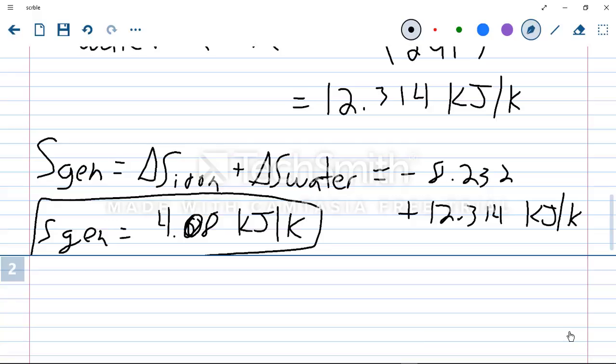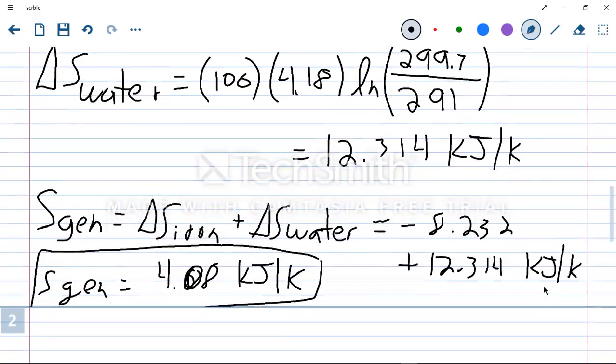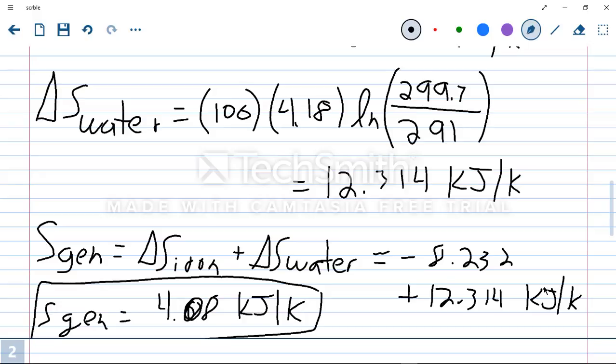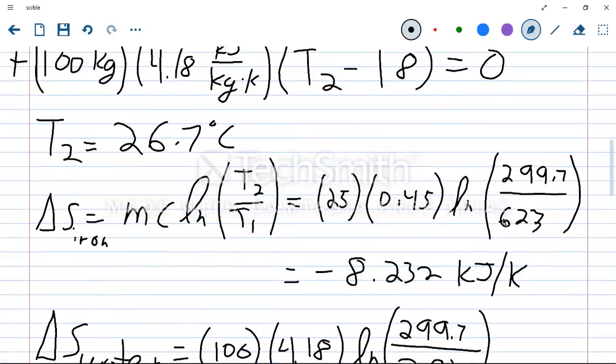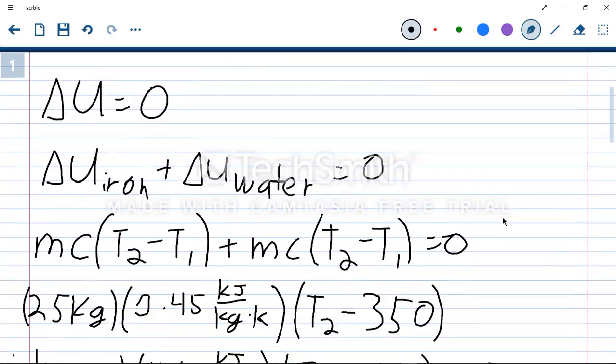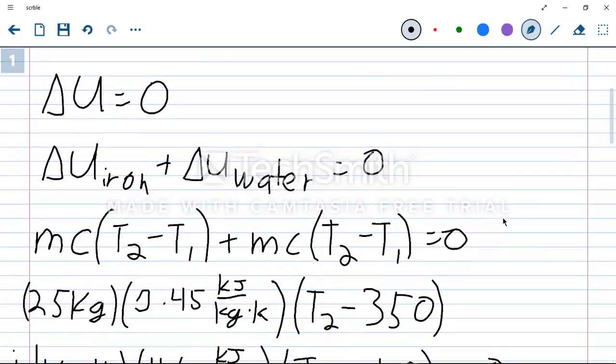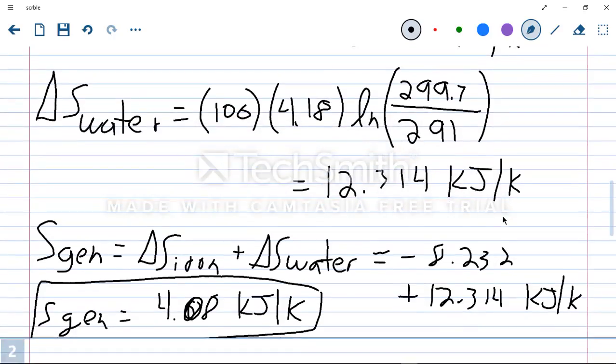Looking at this answer, we see that the entropy of the total system has increased, and that's okay. We know that even though the entropy of one of the components of the system has gone down, the entropy of the system can still increase, given our definition for entropy. So this is a calculation for placing an iron block in a tank of water, ending at the same temperature, and we find that the total entropy generated is a positive 4.08 kilojoules per Kelvin.